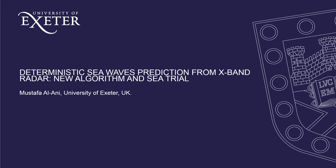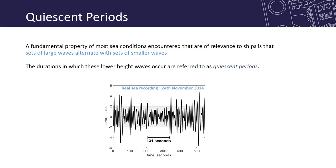Hi everyone, my name is Mustafa Lani and my presentation is about deterministic sea waves prediction from X-band radar: a new algorithm and sea trial. I believe a lot of you are not familiar with waves prediction, so I would like to take a step backwards and introduce you to the topic. A fundamental property of most sea conditions relevant to ships is that sets of larger waves alternate with sets of smaller waves — in other words, smaller waves tend to group together. The duration in which these smaller waves happen is referred to as the quiescent periods. We can see here a recording of the sea elevation.